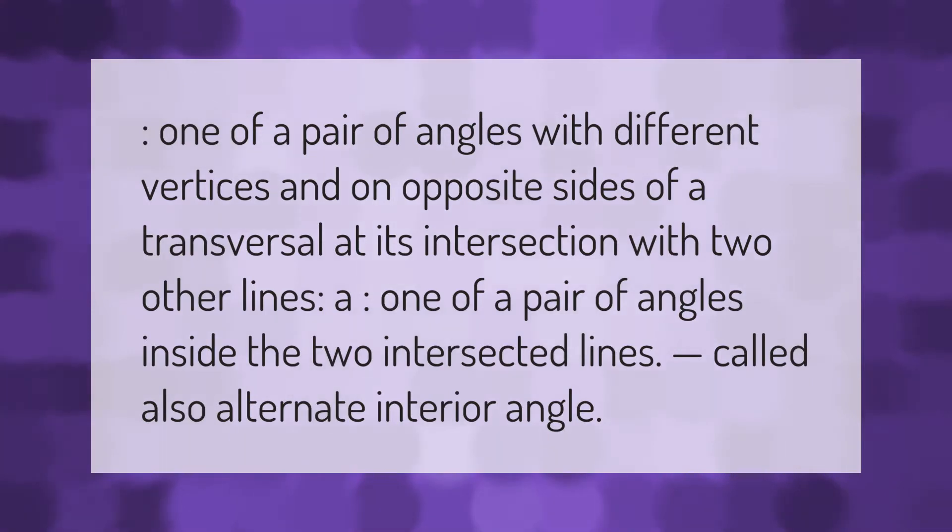One of a pair of angles with different vertices and on opposite sides of a transversal at its intersection with two other lines. One of a pair of angles inside the two intersected lines, called also alternate interior angle.